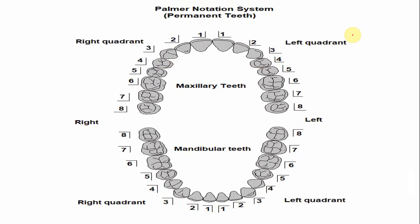In the Palmer notation system, the right maxillary first premolar has the number 4. The shape of the bracket indicates the maxillary right quadrant, and the number indicates the tooth number. Similarly, in the left maxillary quadrant, the number is also 4 with the corresponding bracket shape.